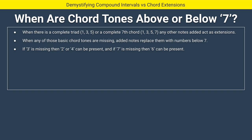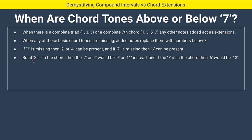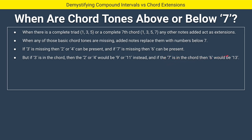When any of those basic chord tones are missing, however, the added notes replacing them use numbers below seven. If the three is missing, then two or four can be present and don't have to be extensions. If seven is missing, then six can be present without being thirteen. So: if the three is missing, two is not nine and four is not eleven. If the three is there, two is nine and four is eleven. If the seven is there, six is thirteen.